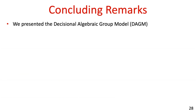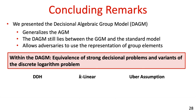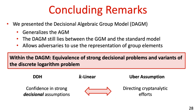So let's conclude. We presented the Decisional Algebraic Group Model, or the DAGM for short. This is a generalization of the algebraic group model that enables reasoning about decisional problems, while still being a weakening of the generic group model and allowing adversaries to use the representation of group elements. Within this model, we presented several equivalence results between strong decisional problems and variants of the discrete logarithm problem, and we saw one of them in detail. Our results can be seen as bolstering confidence in these strong decisional assumptions, while suggesting that anyone wishing to refute them should either direct efforts towards extracting discrete logarithms or deviate from all algebraic techniques captured within our framework. Thank you for listening.